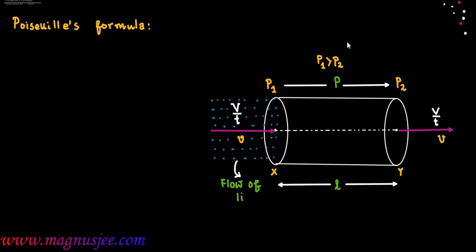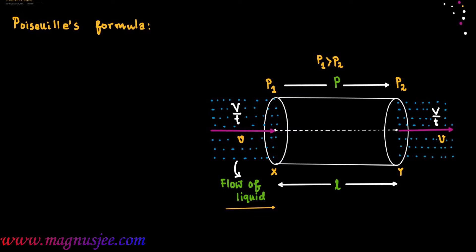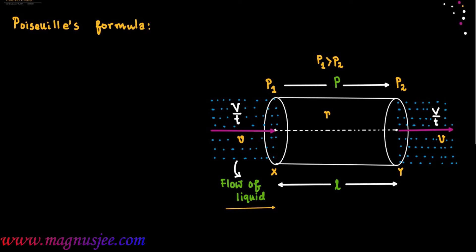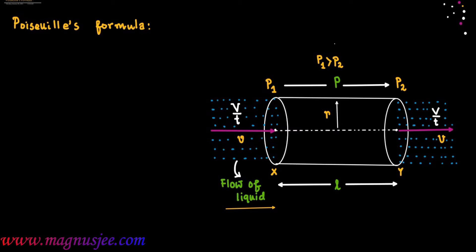This is the flow of liquid through this narrow horizontal tube of length L and radius R. Liquid emerges from end y with the same rate V by T and with the same speed, small v. The pipe x y has length L, radius R, and under the pressure difference P, liquid flows towards the right from x to y. Eta is the coefficient of viscosity of the liquid flowing through the pipe.